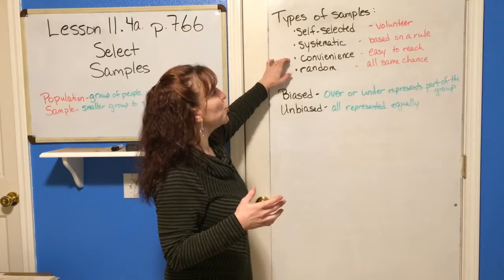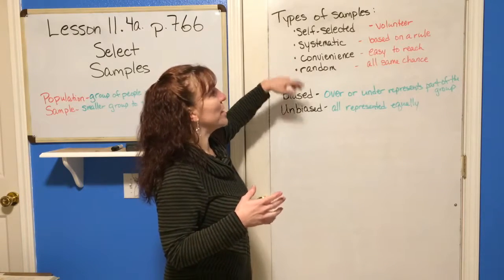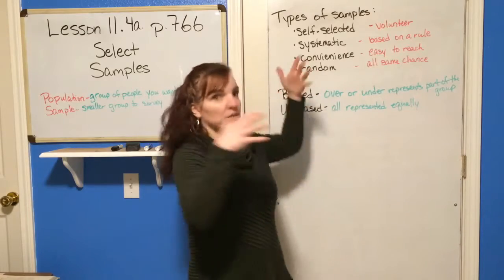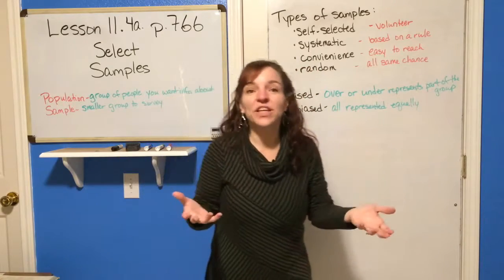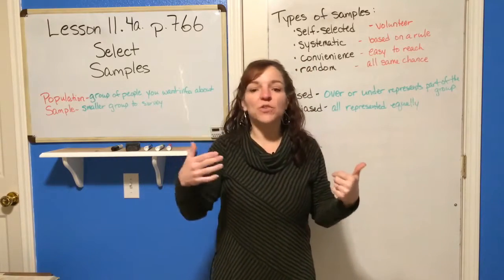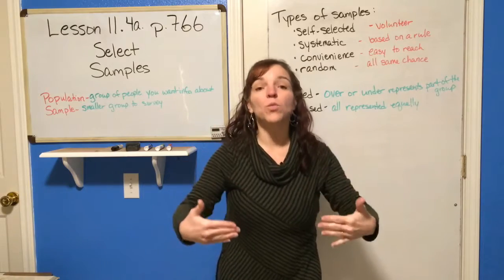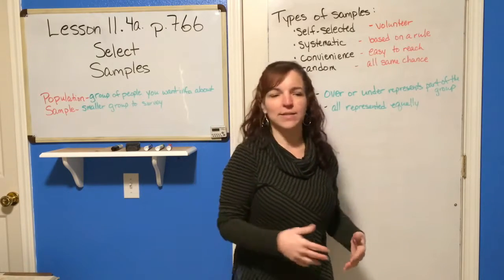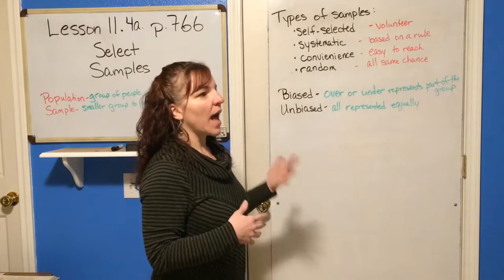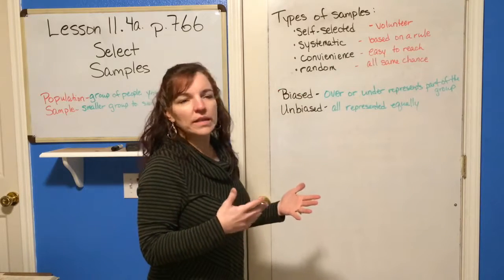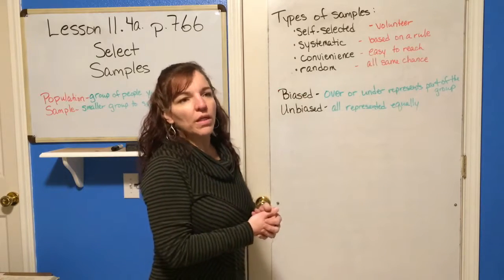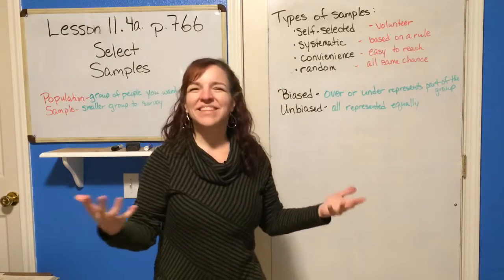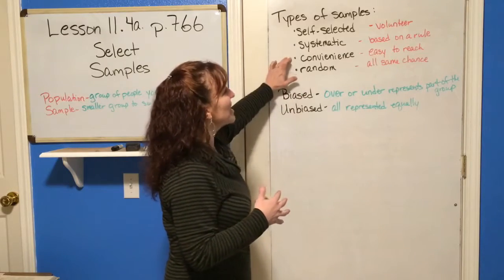You can also choose a sample based on convenience — and that's simply how easy they are to reach. So I might survey everyone in the front row because they're closer and easier to access. I may only contact people that live on my city block. That would be convenience.